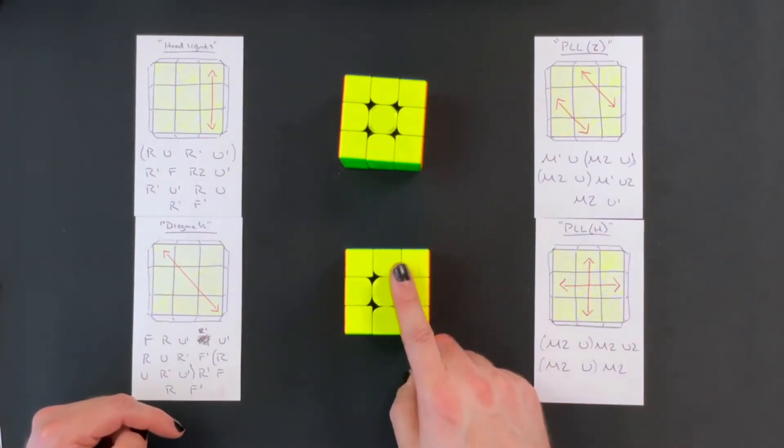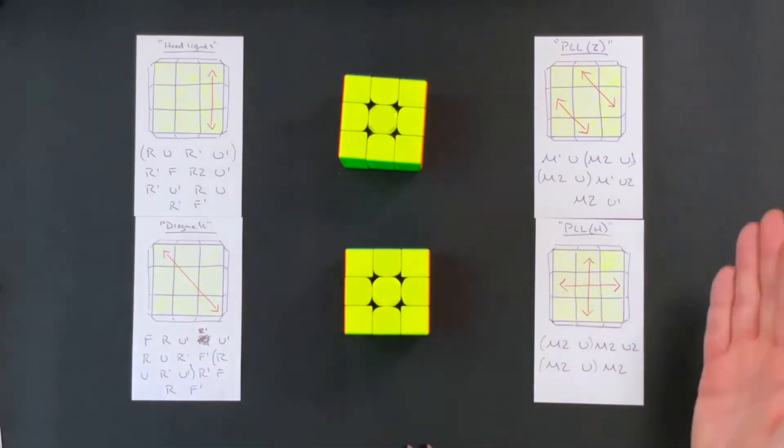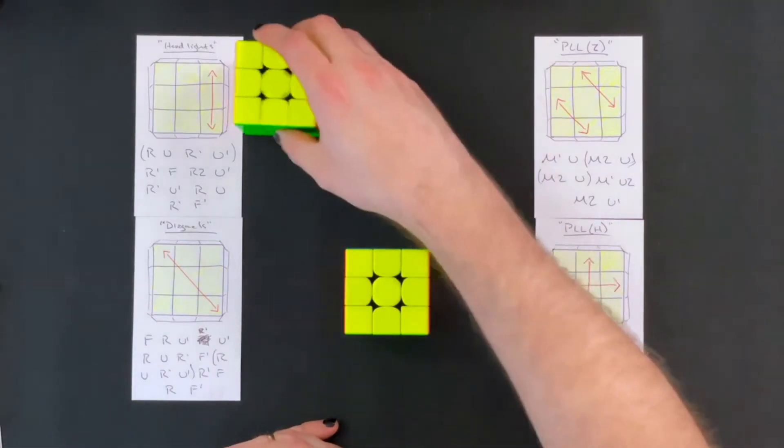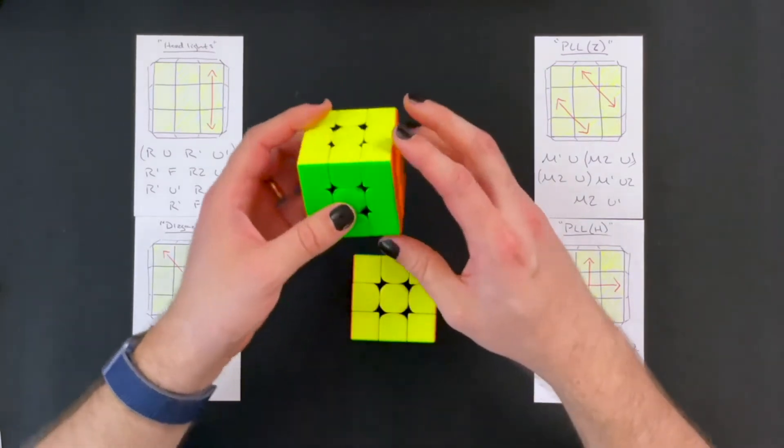But these algorithms do lead to themselves. So doing headlights leads to headlights. Diagonal leads to diagonal. And then you just have to do it again to solve the cube.